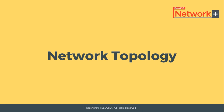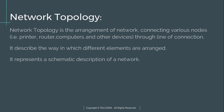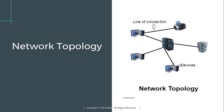Today we will discuss network topology. Network topology is the arrangement of a network connecting various nodes — that is, printers, routers, computers, and other devices — through lines of connection. It describes the way in which different elements are arranged, and represents a schematic description of a network. This diagram shows a network topology where various devices are connected through lines of connection.